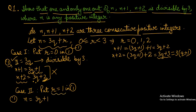So in case number 2, where r equals 1: when we divide n by 3, the quotient is q and the remainder is 1. When we divide n plus 1 by 3, the quotient is q and the remainder is 2. When we divide n plus 2 by 3, the quotient is q plus 1 and the remainder is 0. Remainder 0 means this number n plus 2 is divisible by 3.